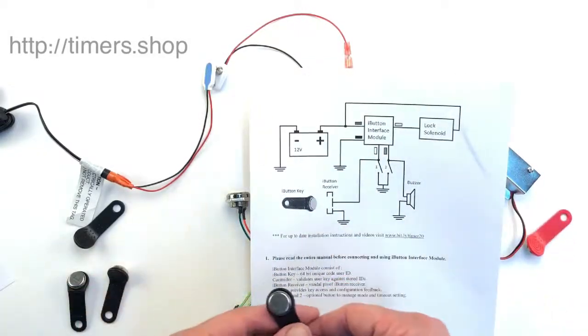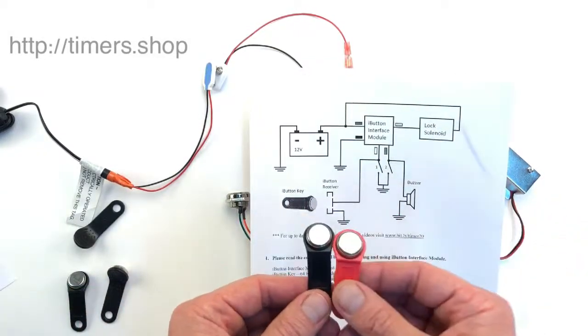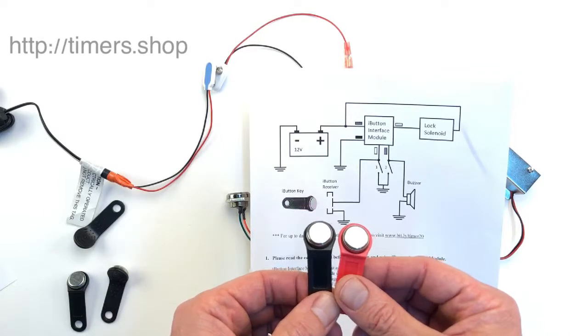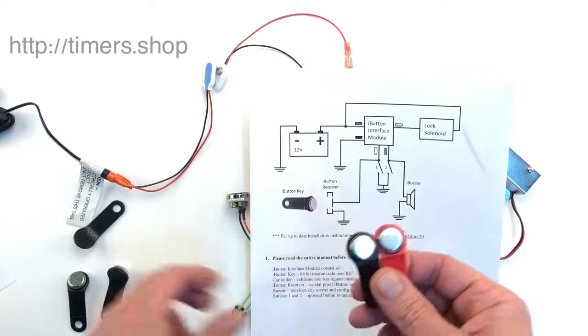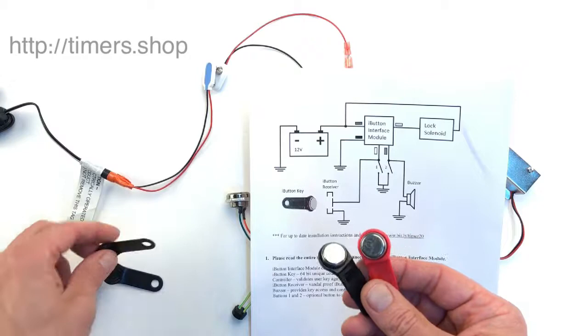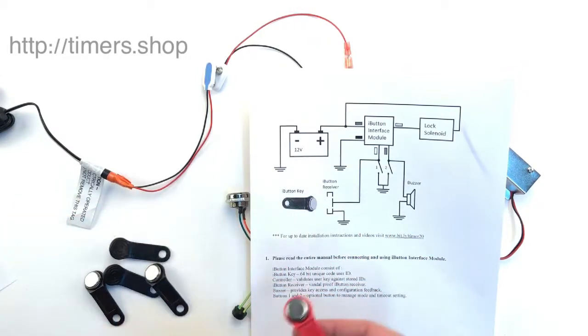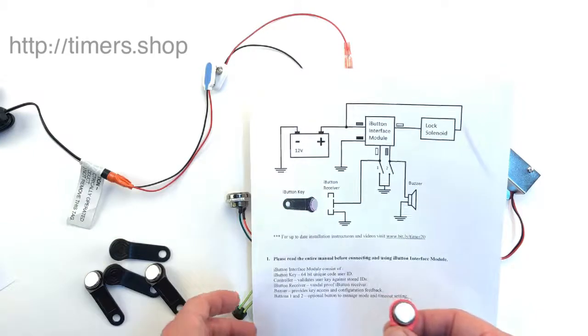The iButton keys are inexpensive keys. They have unique 64-bit electronic codes, and like I said, they're very cheap so you can buy a number of them. So the way you create a lock...